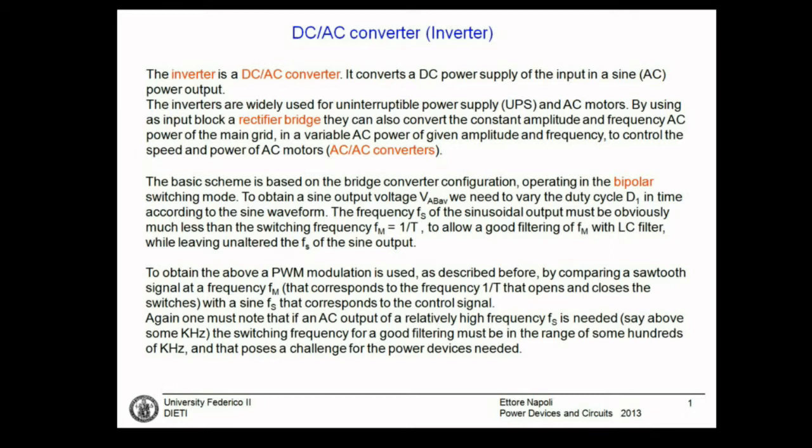Inverters can also be used to convert a constant amplitude DC voltage to an AC voltage to feed the main grid. In other applications, together with other circuits, you can also have an AC-to-AC converter. These are an even more general application.